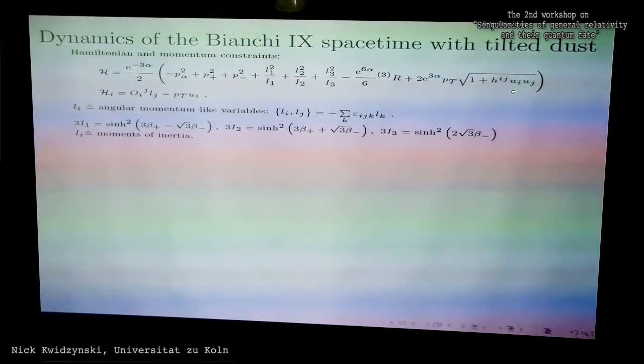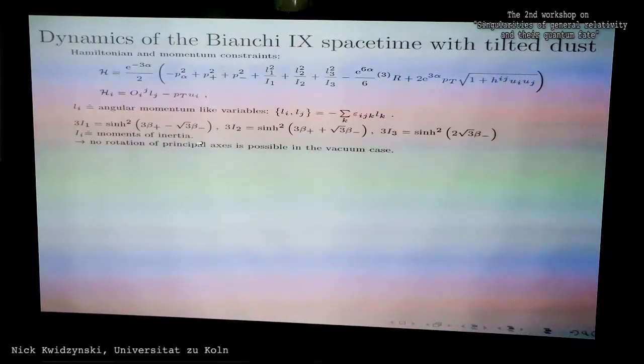There is another potential term. The Ui here are the coefficients of the dust velocity—this comes from the dust I've coupled to the model. PT is basically a constant, corresponding to the momentum of the dust in the Kuchař-Brown formula. It's a parameter which controls the energy density of the dust in this model. From the momentum constraints we can conclude that when PT is zero, no rotation of the principal axis is possible in the vacuum case, so we recover the mixmaster model. We have to couple some matter to really get rotation of the principal axis.